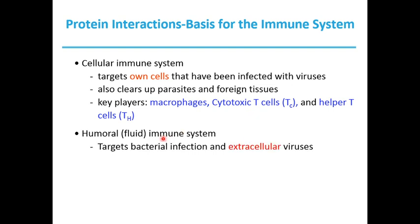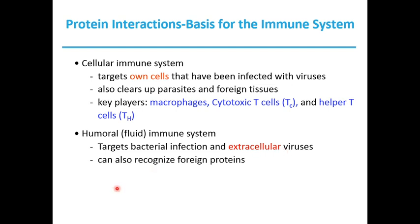The humoral immune system targets bacterial infections and extracellular viruses. The key difference is that the cellular immune system targets its own cells already infected with viruses, whereas the humoral immune system targets cells foreign to our body — for example, bacterial infections, extracellular viruses, and foreign proteins such as proteins secreted by bacteria or viruses floating in the blood. These get recognized by the humoral immune system.